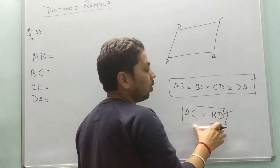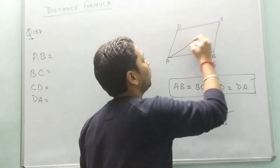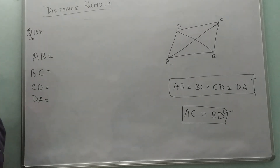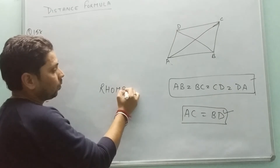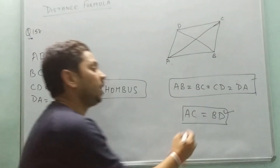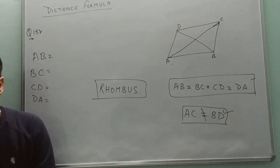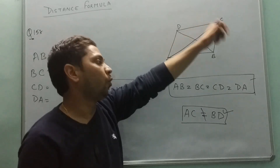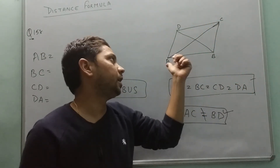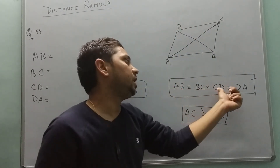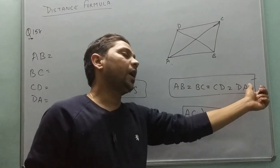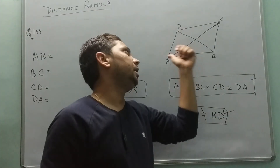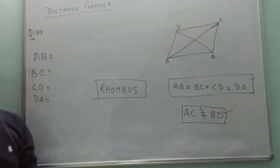What makes a rhombus different from a square is the diagonal condition. In a square, diagonals are equal: AC equals BD. But in a rhombus, we have to prove that AC is NOT equal to BD. So apply the distance formula to find all four sides and check they are equal, then verify that the diagonals AC and BD are not equal — that confirms it is a rhombus and not a square.